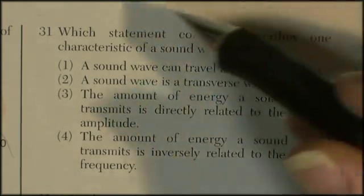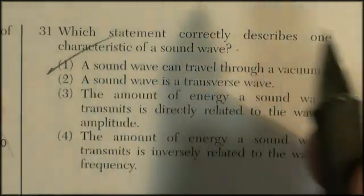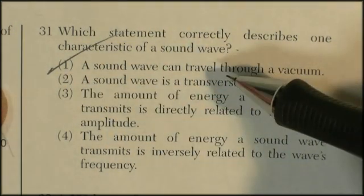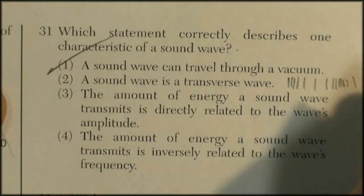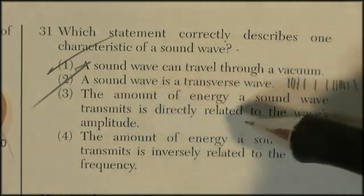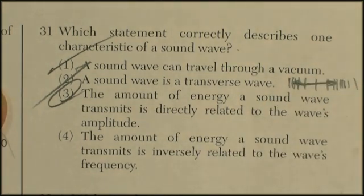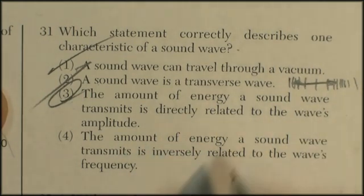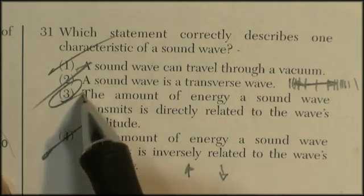Question 31: Which statement correctly describes one characteristic of a sound wave? A sound wave can travel through a vacuum - that is not true. Sound can't travel through a vacuum, which makes you wonder why vacuums are so loud. A sound wave is a transverse wave - in fact, sound waves are longitudinal waves. You can compress a region and then it expands. The amount of energy a sound wave transmits is directly proportional to the wave's amplitude - that is correct. Amplitude is wave energy. The amount of energy a sound wave transmits is inversely relative to the wave's frequency - that doesn't make sense. The correct answer is 3.